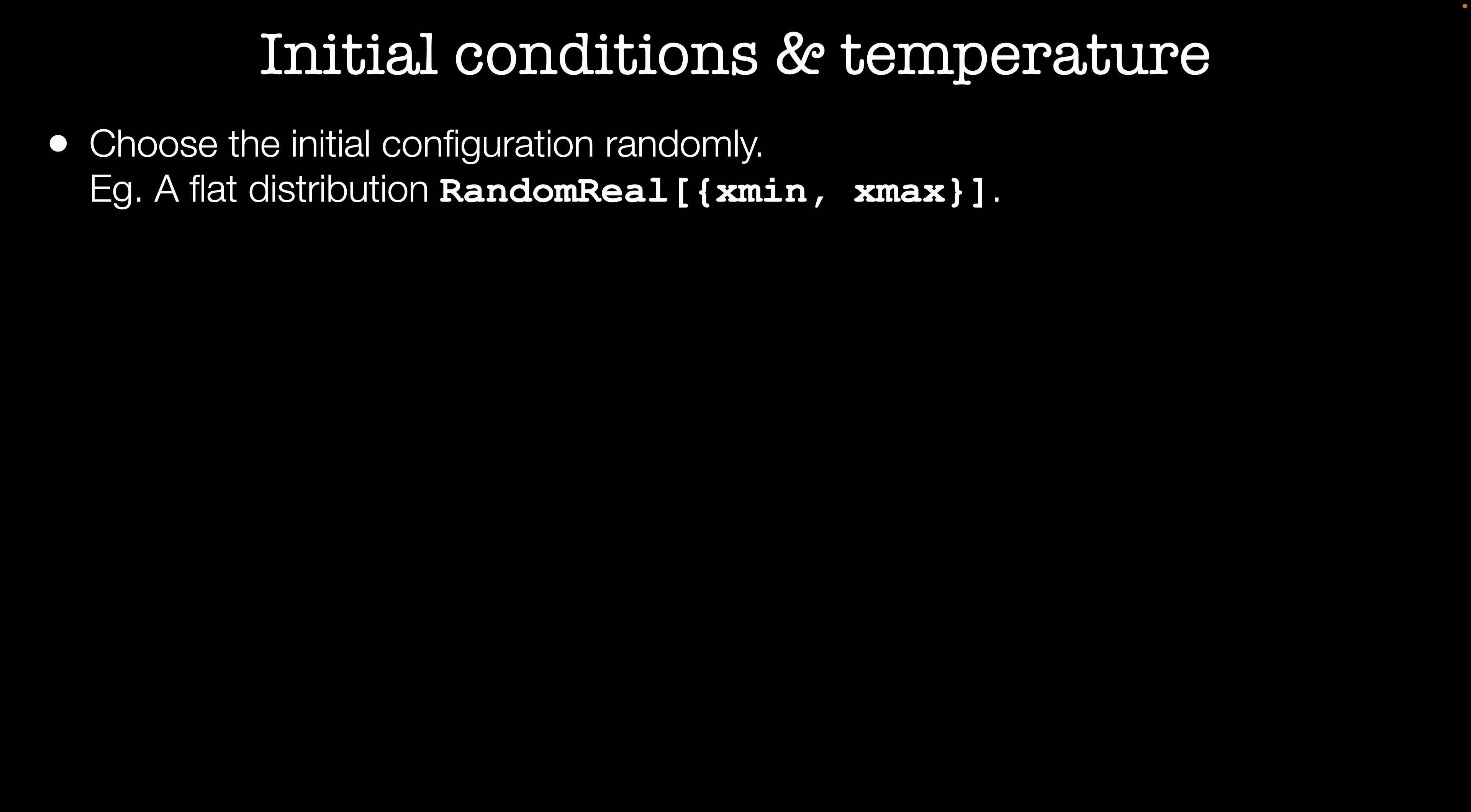So one way to pick initial positions is to use a flat distribution. Imagine our simulation box has bounds at x_min and x_max. That means that there's an equal probability for a particle to be at any position within these bounds. In Mathematica, we can use the function RandomReal to pick the position of particles. We can also use a seed for the pseudorandom number generator if we want the initial condition to be the same between runs.